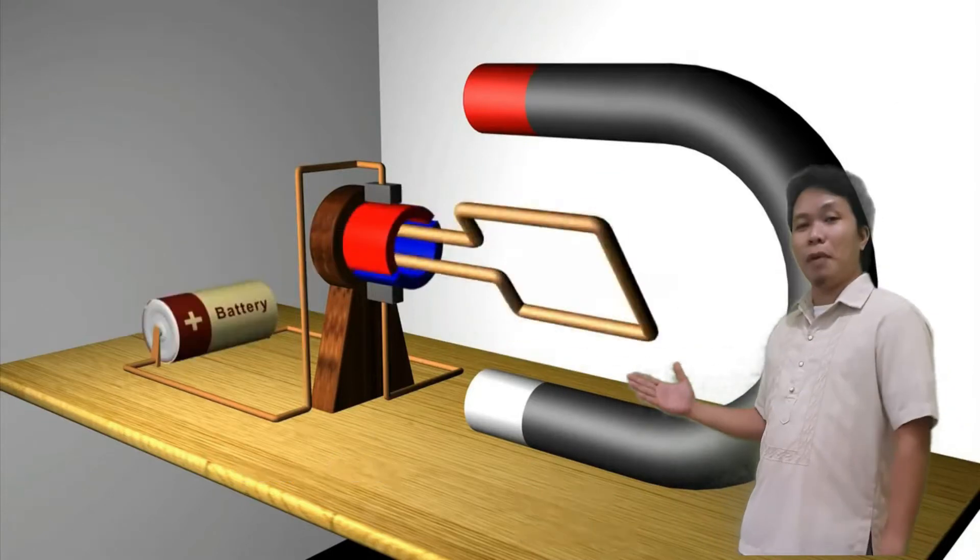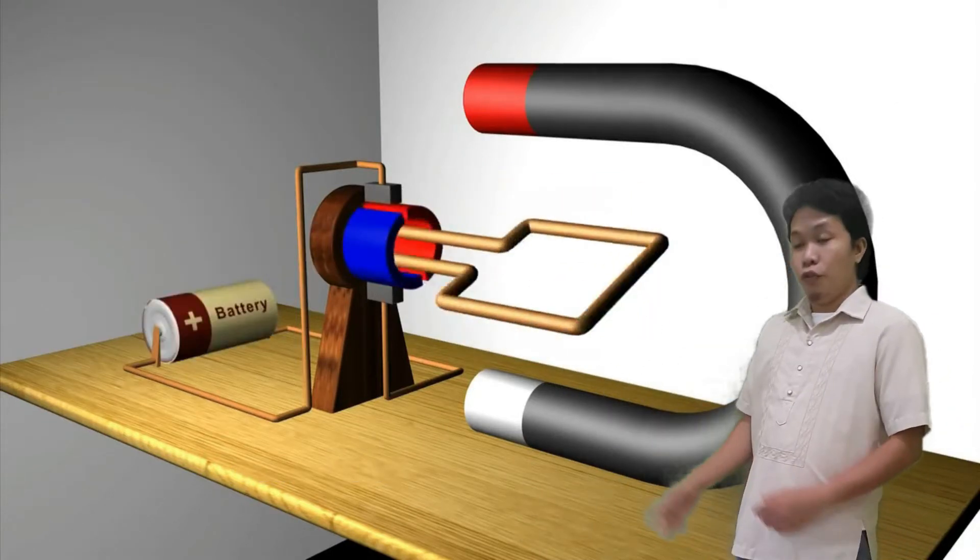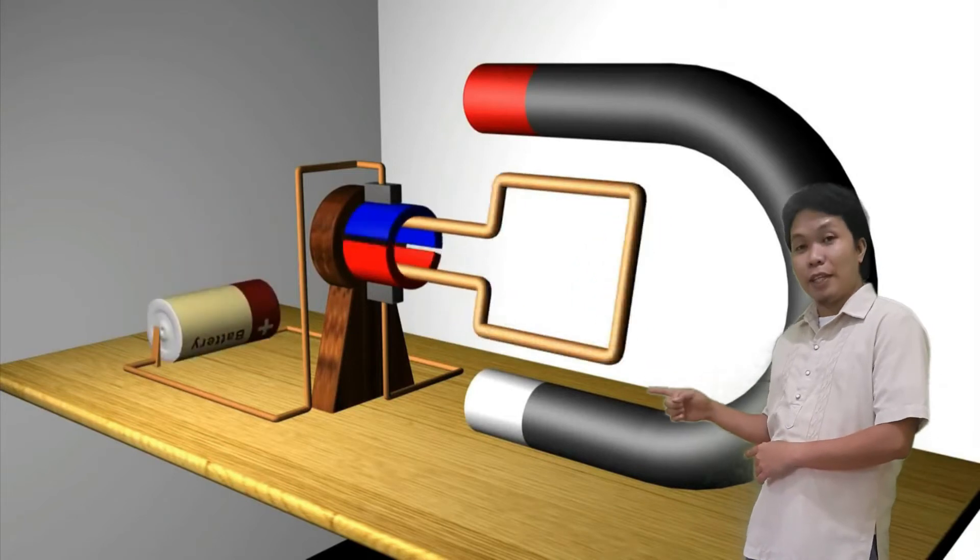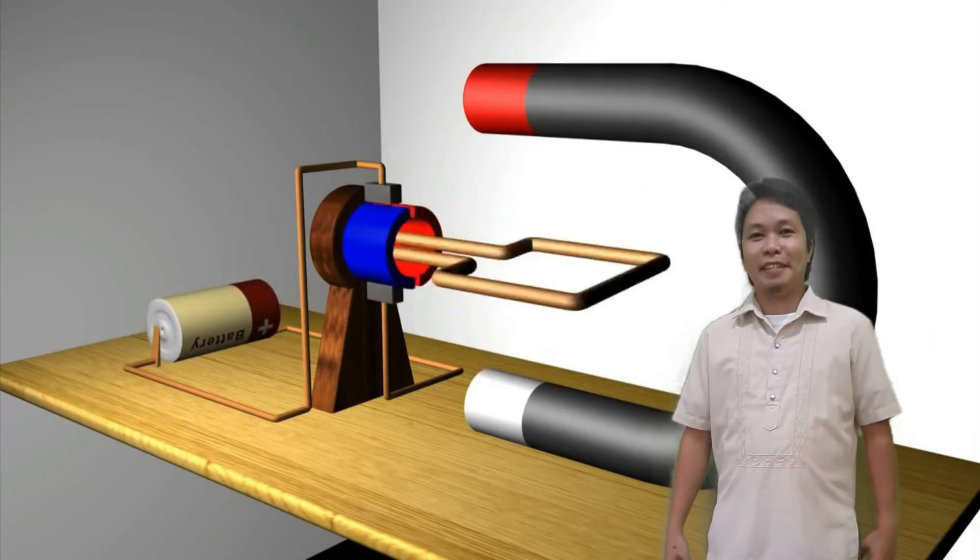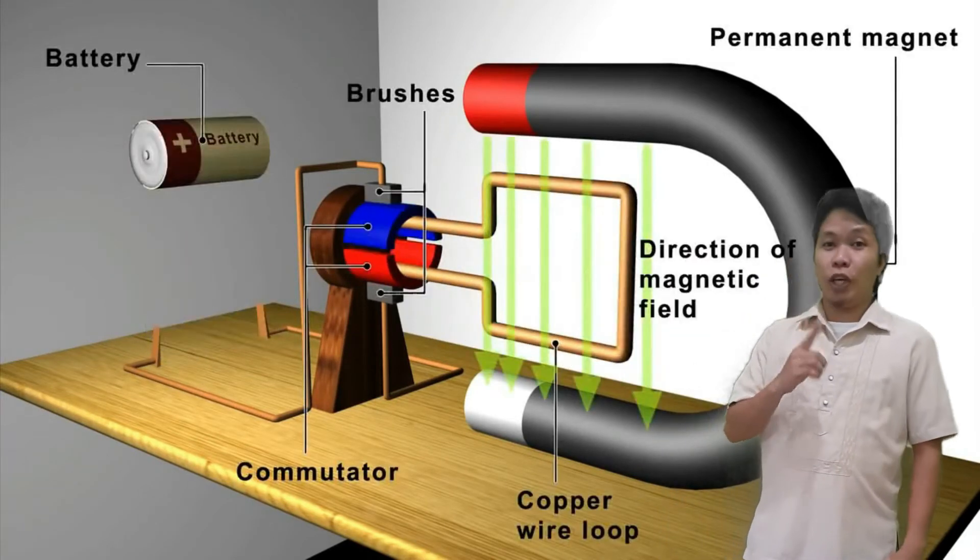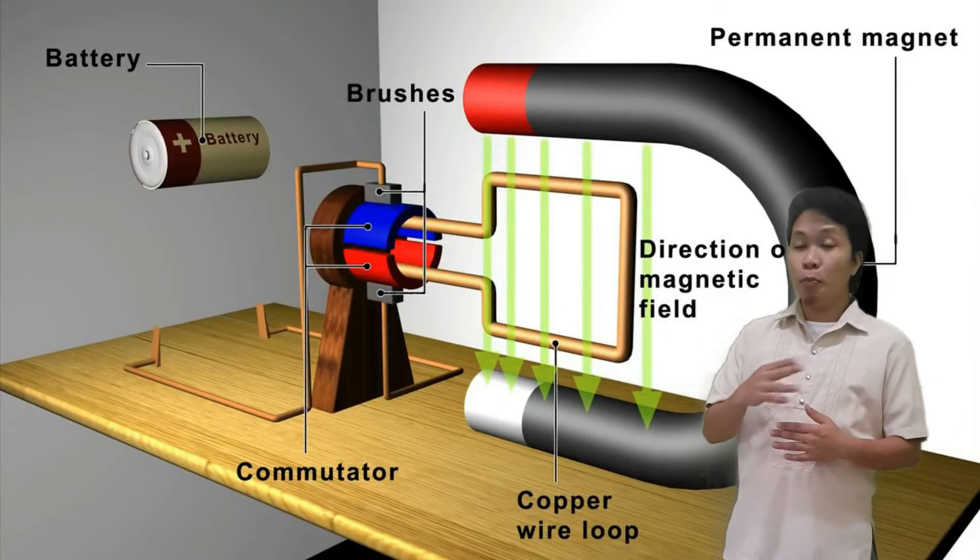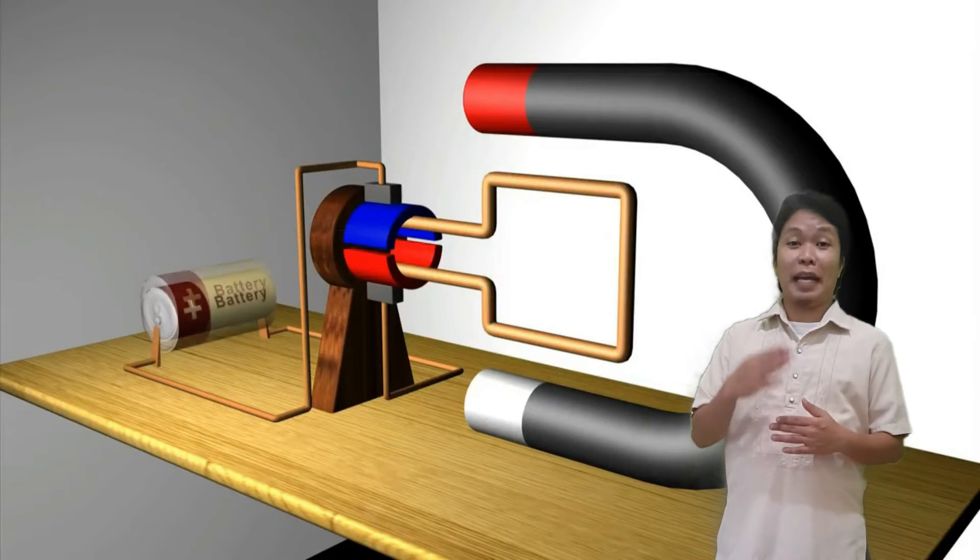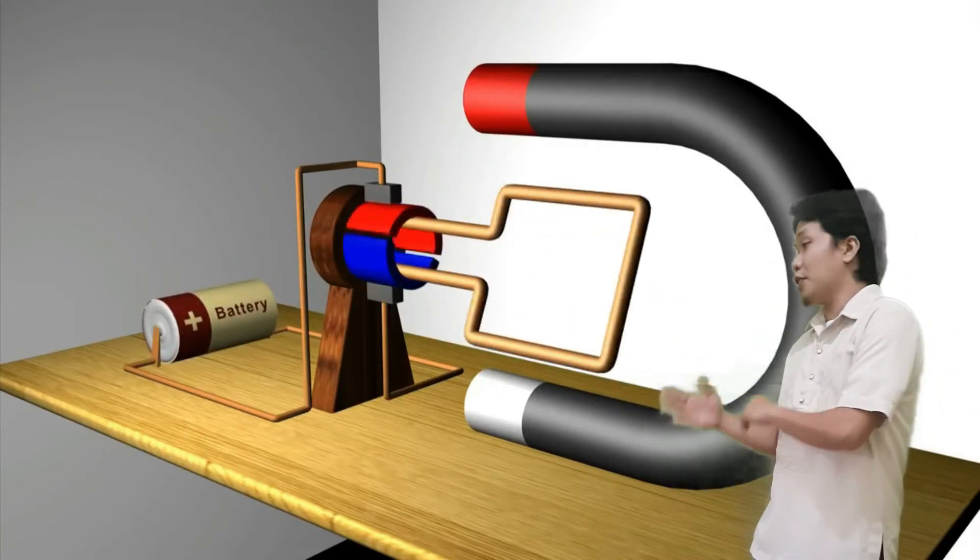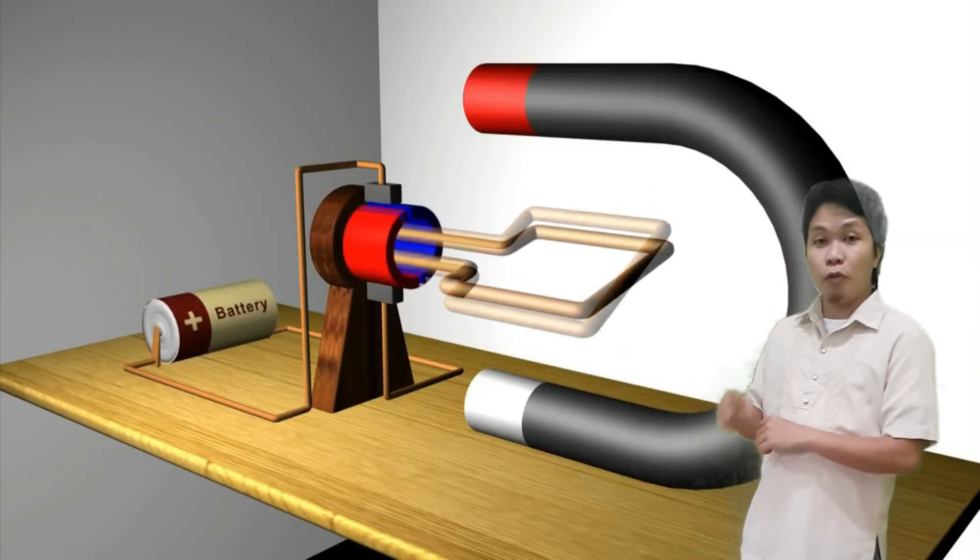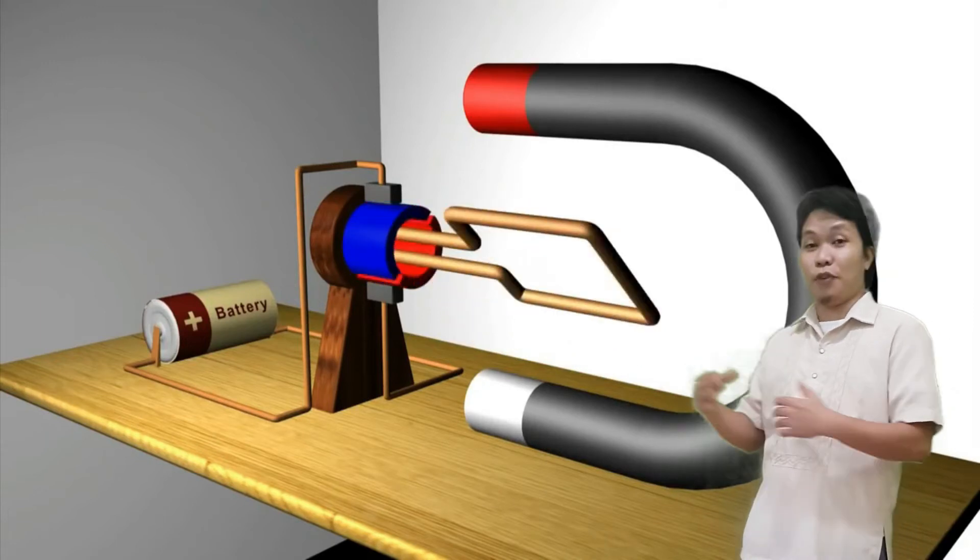As soon as the battery is attached, the loop of wire will rotate around the permanent magnet. This is due to the electromagnetic fields that are present in the loop of wire as well as in the magnet. See, as the battery is attached, the loop of wire rotates.